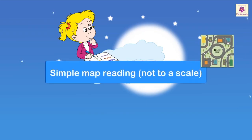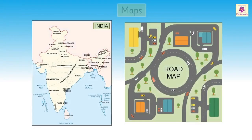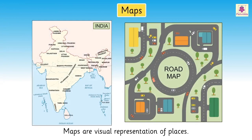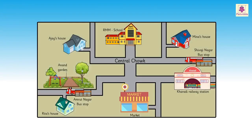Simple Map Reading — Not to a Scale. Maps are visual representations of places. There are different types of maps. Today, let us learn about a Road Map.